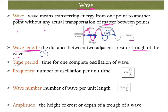Next is the time period. The time period is the time for one complete oscillation of the wave — that means the time taken for the wave to complete one crest and one trough. The time taken to complete this full path is known as the time period.